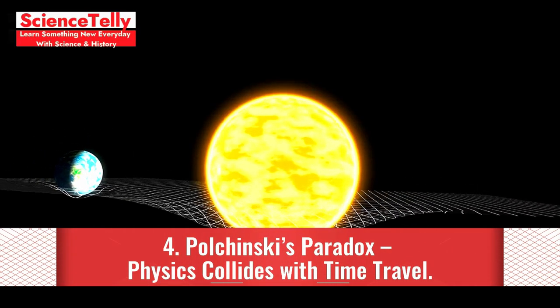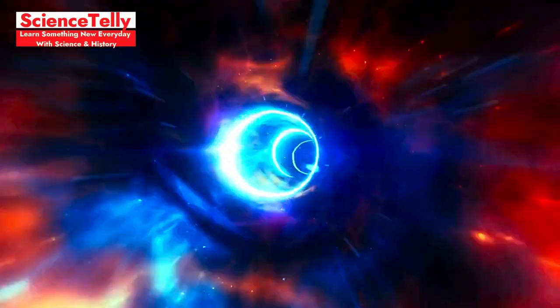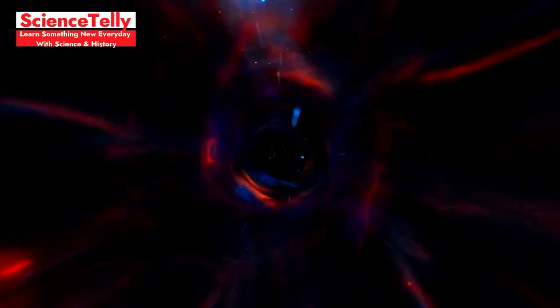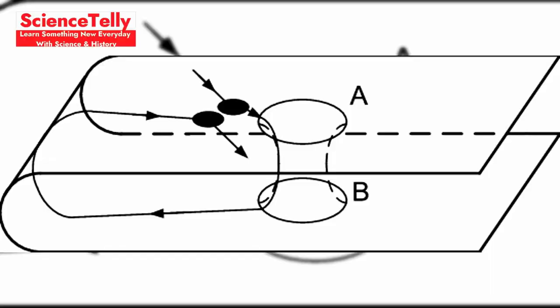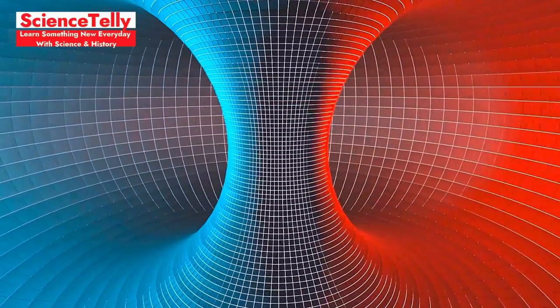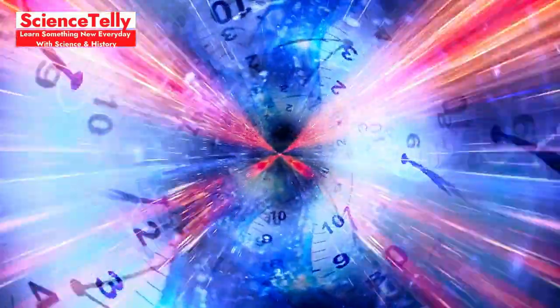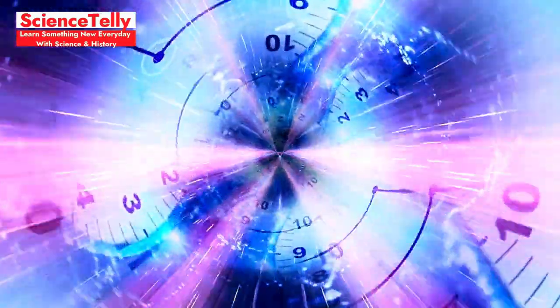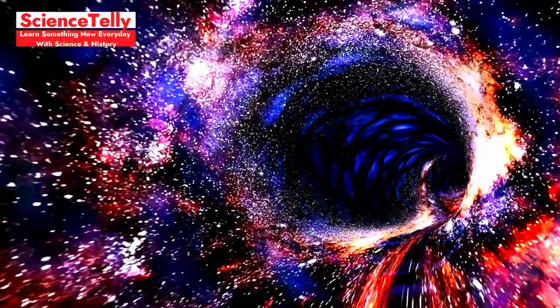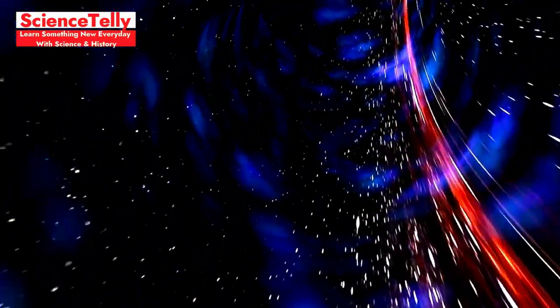Four, Polchinsky's paradox, physics collides with time travel. Polchinsky's paradox explores the physics of time travel. Imagine a billiard ball rolling towards a wormhole that loops it back in time by a few seconds. But once it emerges, it collides with its past self, stopping it from ever entering the wormhole. This creates a contradiction. If the ball didn't enter the wormhole, how did it exit? Some physicists think alternate timelines might allow every possibility to play out separately, avoiding such contradictions. It's a mind-bending problem in physics, revealing the strange loops that could happen if time travel affects itself.